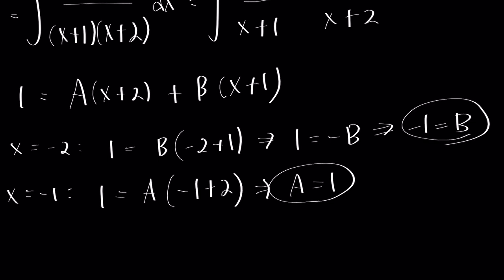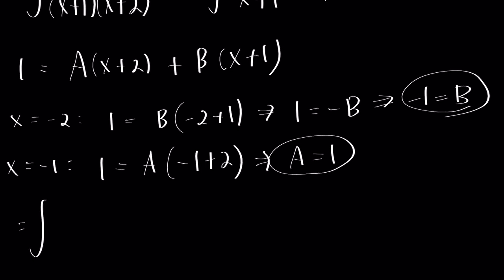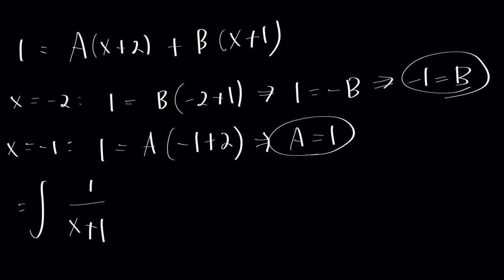And we could plug it back into our integral. This is equal to the integral of a over x plus 1, which is now 1 over x plus 1. And then we said b was negative 1, so it's going to turn into a minus 1 over x plus 2 dx.